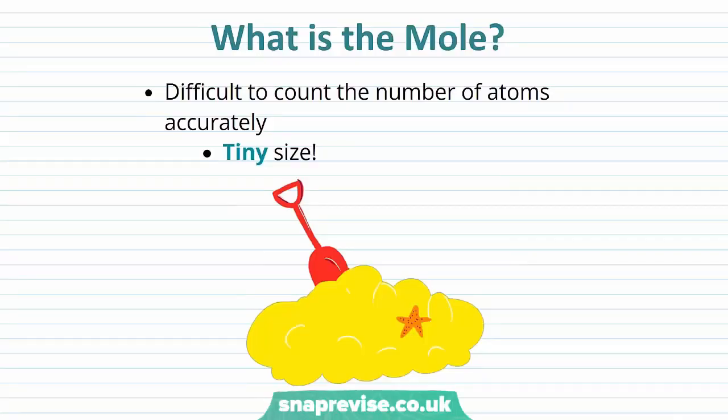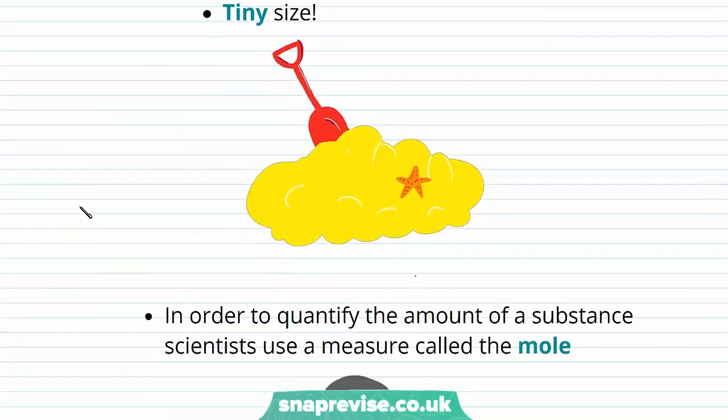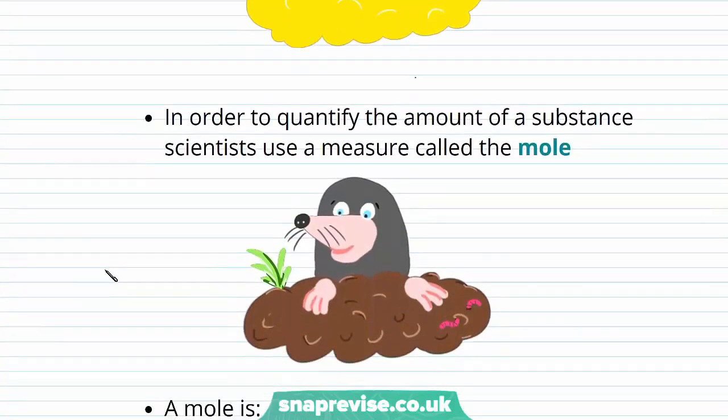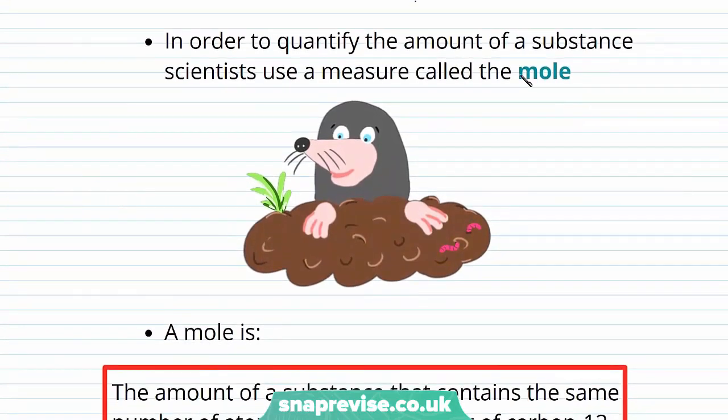So what is the mole? Well, it's incredibly difficult for scientists to count numbers of atoms accurately, and that's because of their tiny size. If you imagine trying to count the number of sand grains in a sand castle, it would be incredibly difficult. So in order to quantify the amount of substance, scientists use a measure called the mole.